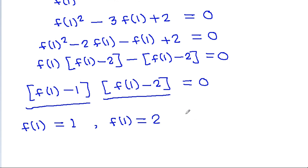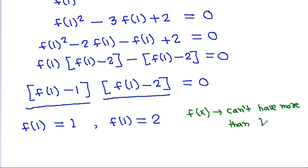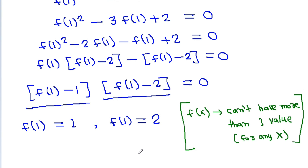But note that any function f(x) cannot have more than one value for any x. So f(1) cannot be 1 and 2 at the same time. So how can we find f(1)?